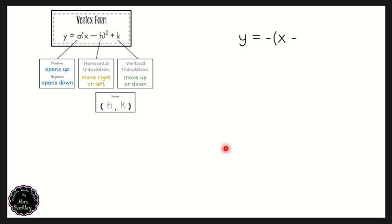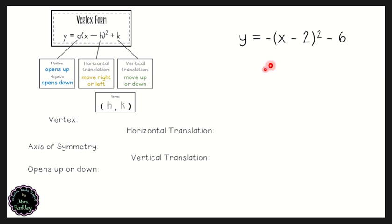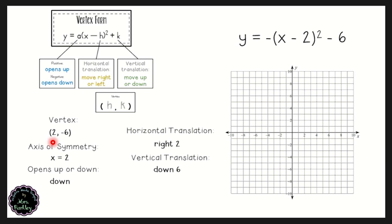For y equals negative times the quantity x minus two, squared, minus six: h equals two and k equals negative six, so the vertex is at (2, -6). The axis of symmetry is x equals two. The a value is negative, so this parabola opens down. The horizontal translation is to the right two and down six. Starting at (2, -6) with the parabola opening down, we go left one down one and mirror that, then left one down three and mirror that, completing the sketch.